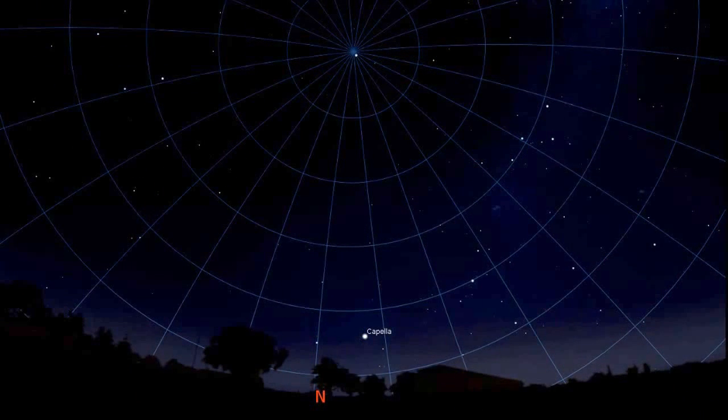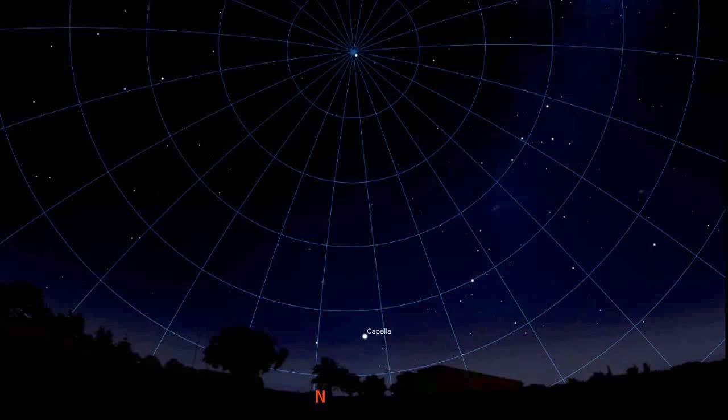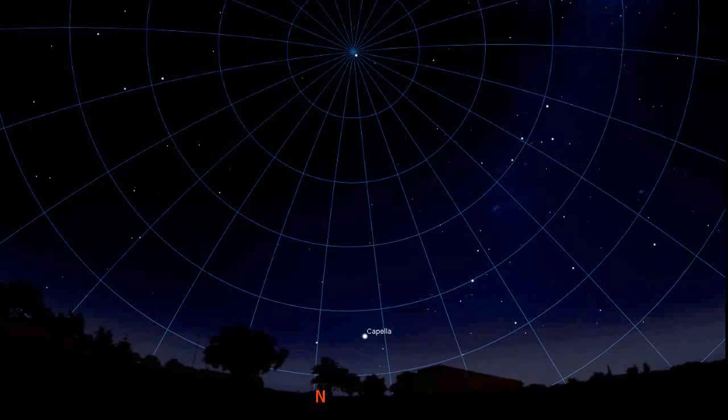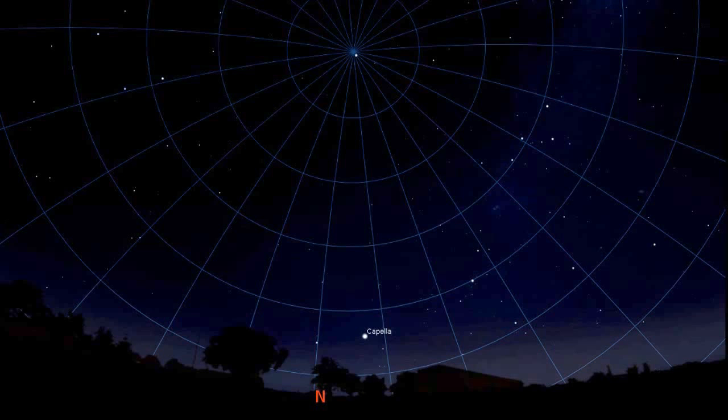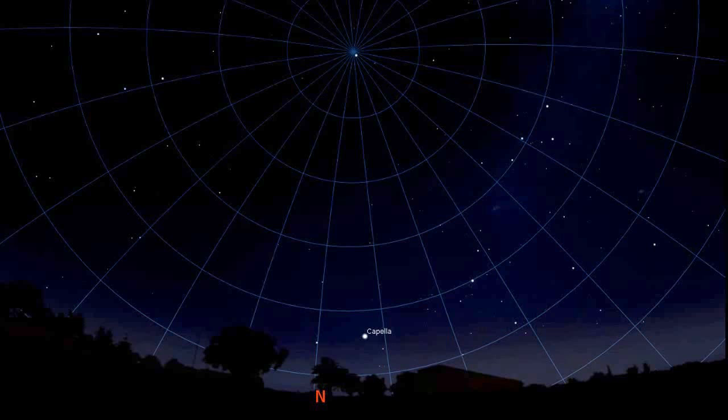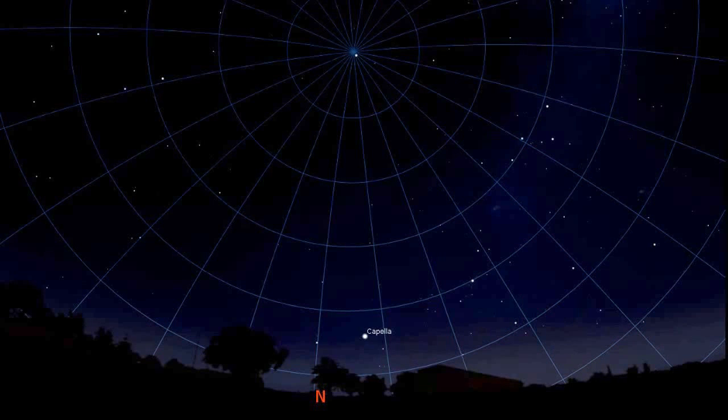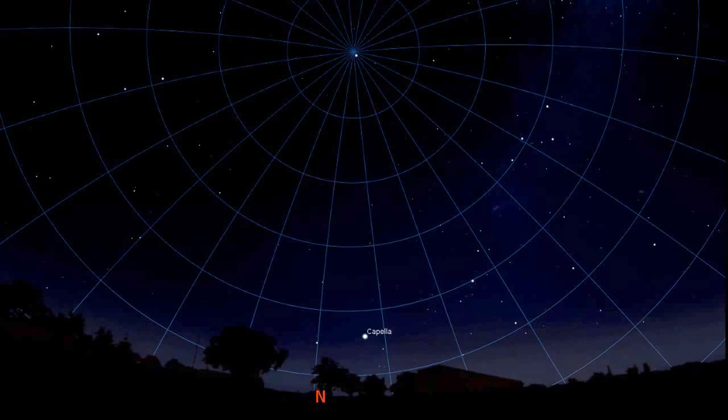Now, the whole point of using an equatorial grid, rather than an azimuth grid, is it will allow you to track the objects in the night sky, the way they move. The problem with an azimuth grid is, the way it tracks, it will go left and right, and up and down, so you end up with zigzags if you're doing astrophotography. Locating night sky objects, the altitude and azimuth of them change throughout the night, whereas the right ascension and declination don't change, simply because of the way the night sky moves, and the way an equatorial grid moves.